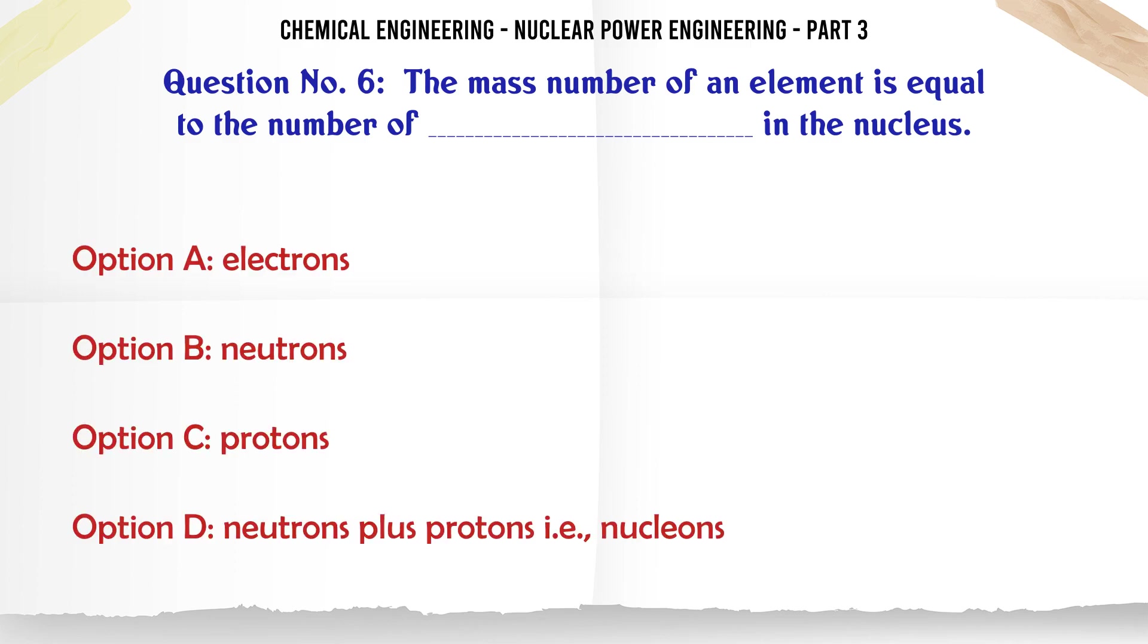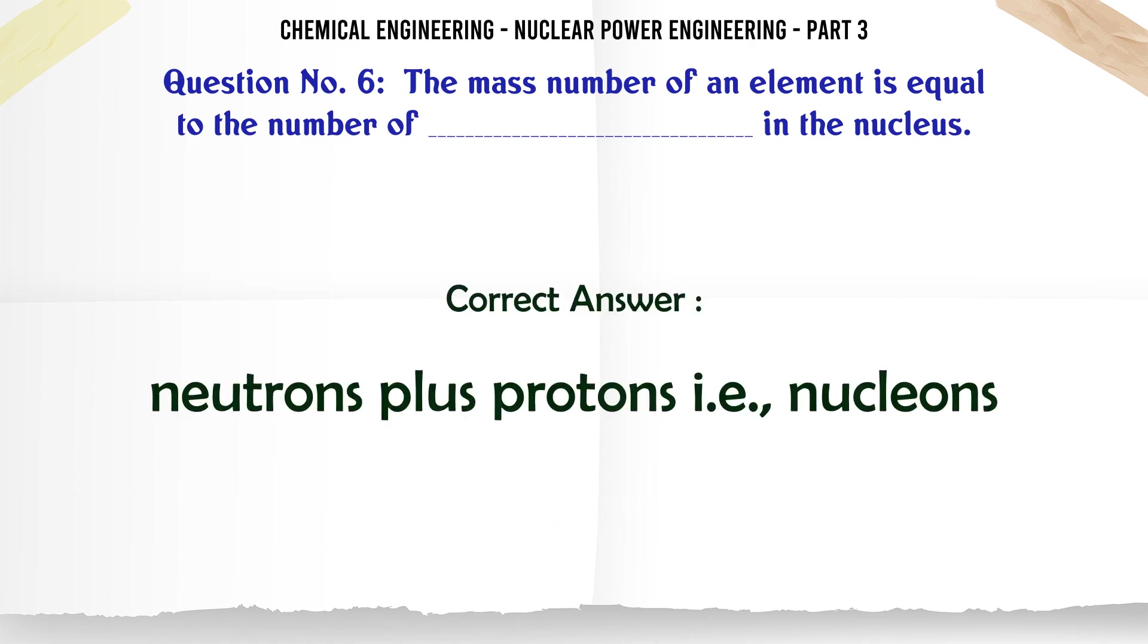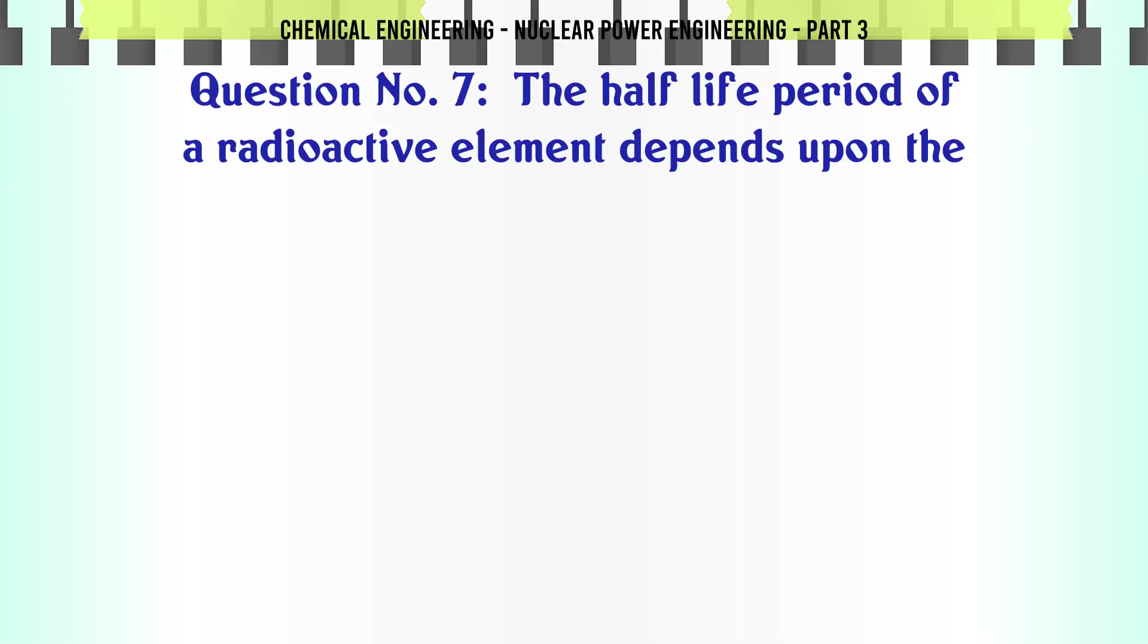The mass number of an element is equal to the number of neutrons plus protons, i.e. nucleons, in the nucleus. The correct answer is neutrons plus protons, i.e. nucleons.